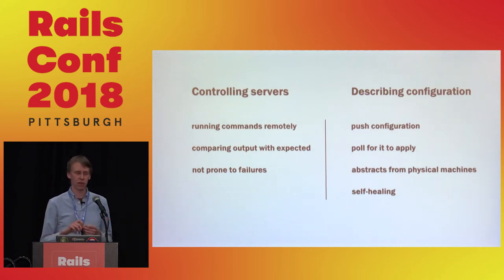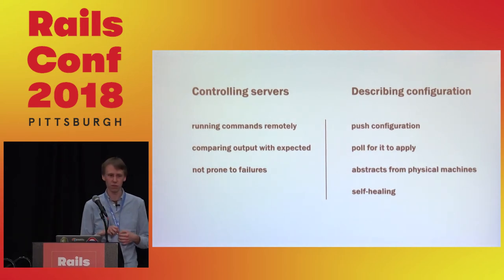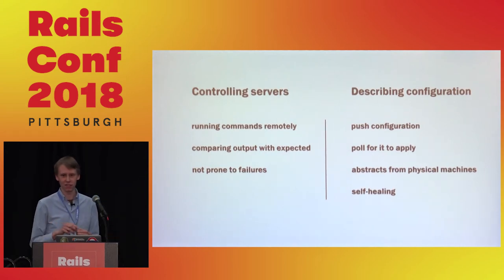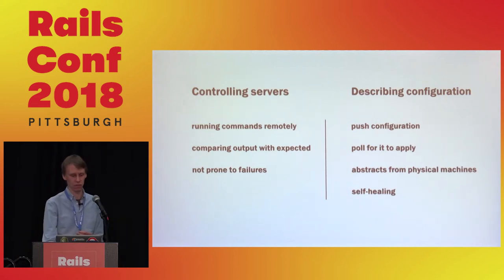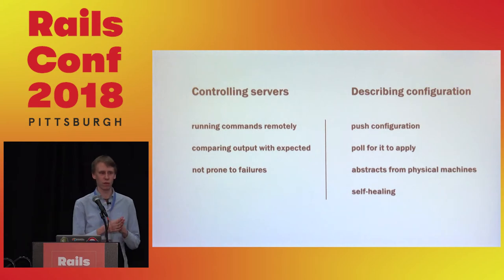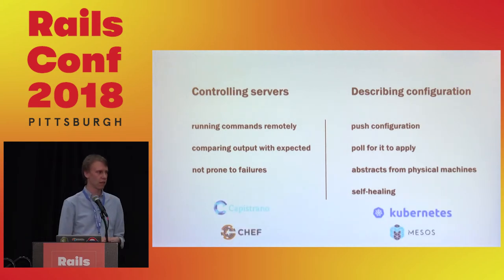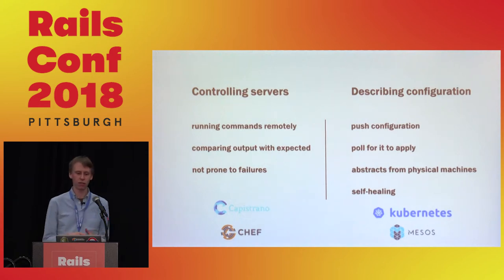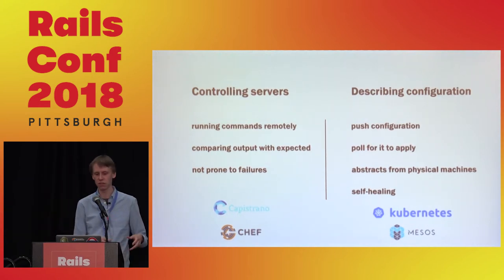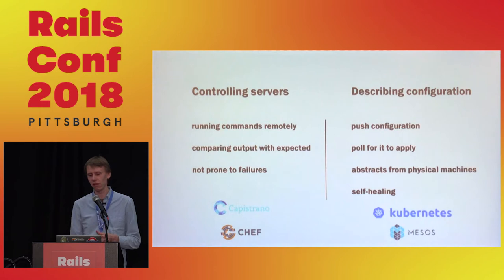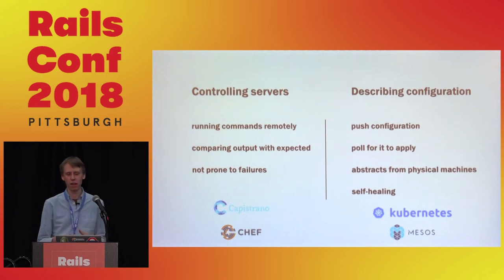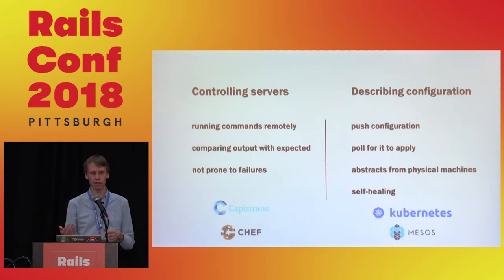For instance, at Shopify we have a Capistrano config with more than a hundred hosts. Eventually, once every couple of months, some hosts would die — just because it's too many servers. This wouldn't self-heal if we were using orchestrated containers. In contrast, platforms like Kubernetes and Mesos let you describe the configuration, describe the desired state, and the platform rolls out that state for you.